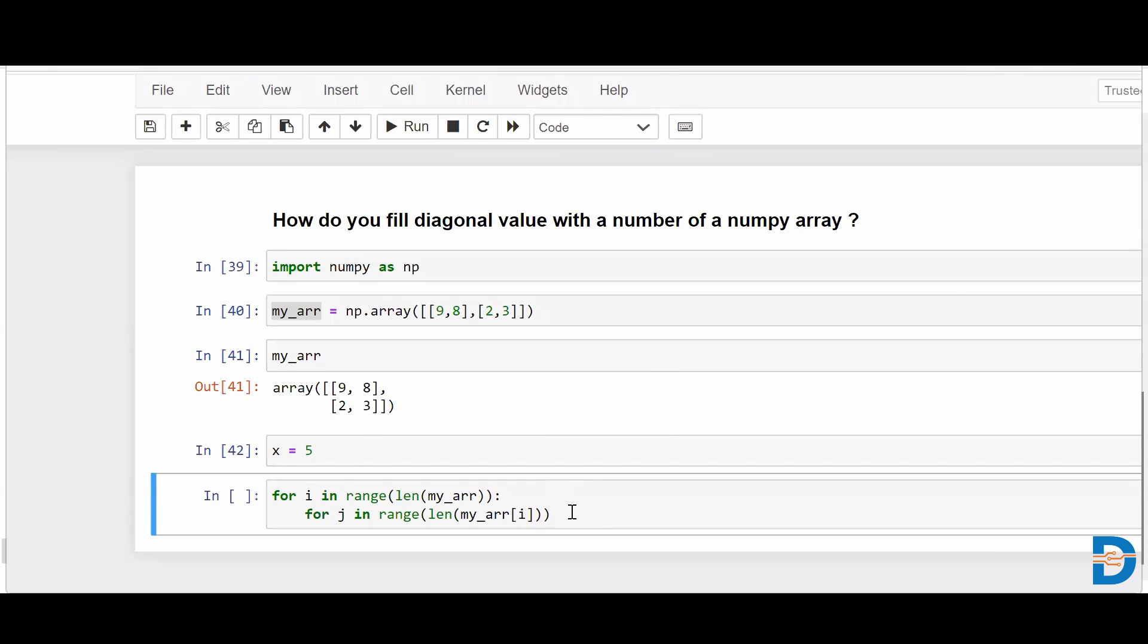Your i is standing as your row indexes and j is standing as your column indexes. Now if I simply put a condition saying that the diagonal element, the property of diagonal element is that its row and column index position is always going to be same. If you see over here, this is zero row and zero index, and this is first row and first index. Row and column indexes are going to be same, this is the property of diagonal value.